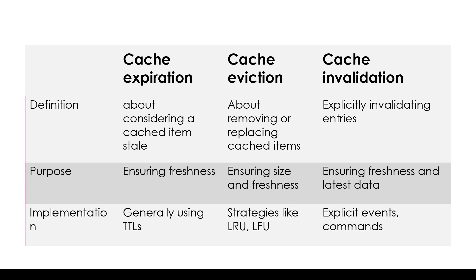Here we see a table with three terms: expiration, eviction, and invalidation. In the first column we see three rows, each specifying a criteria like definition, purpose, and implementation. Starting with cache expiration, the definition says it's about considering a cached item stale.